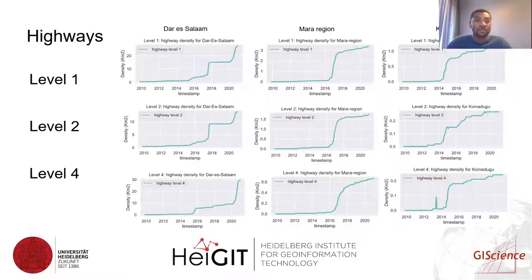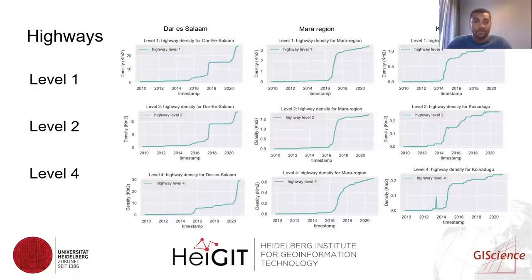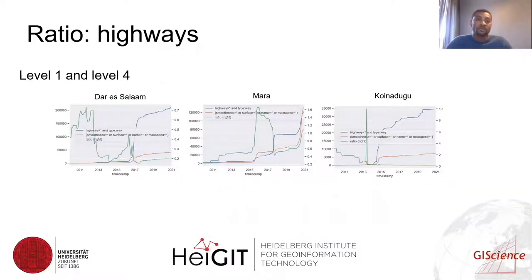A similar trend was also identified in highways and amenities, where sometimes mapping activity tends to be simultaneous. For example, in Dar es Salaam, level one and level two seem to be mapped differently from level four. A similar pattern is identified in the Mara region, but the mapping activities were quite different. In amenities, mapping activities happened differently across all levels. We also included a ratio analysis using highway as an example, showing the differences between level one and level four — and the ratio between the two is quite large.